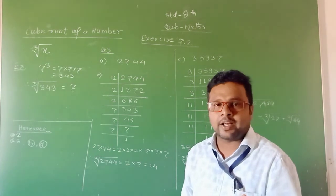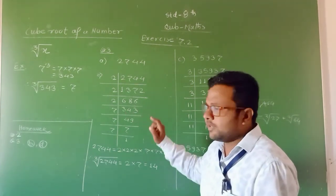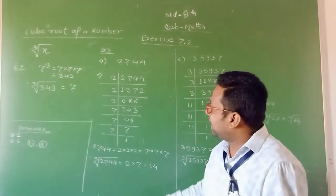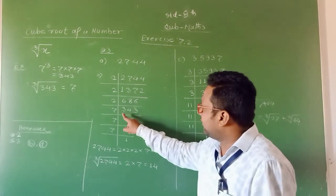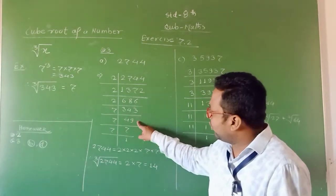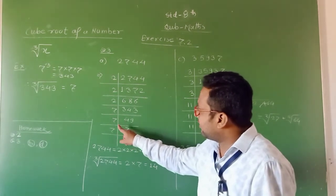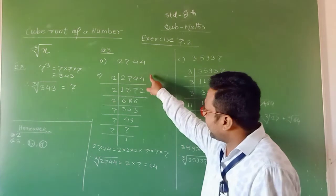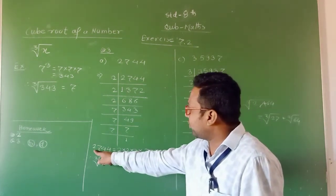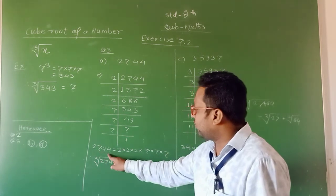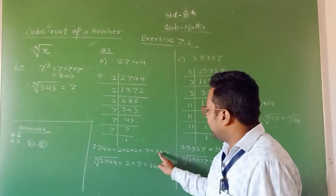The next prime number is 5 — 343 does not end in 5 or 0, so not divisible by 5. Then we check for 7. This number is divisible by 7. After division, we get 49. Again, 49 divided by 7 gives 7. Seven divided by 7 gives 1. So the prime factors for 2744 are 2 into 2 into 2, and 7 into 7 into 7.